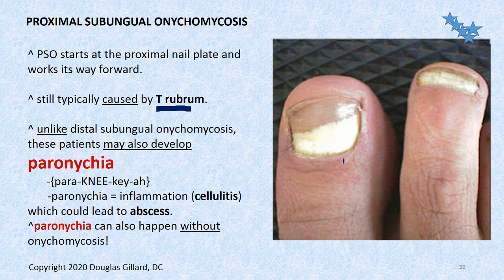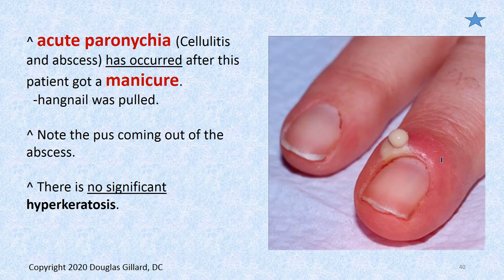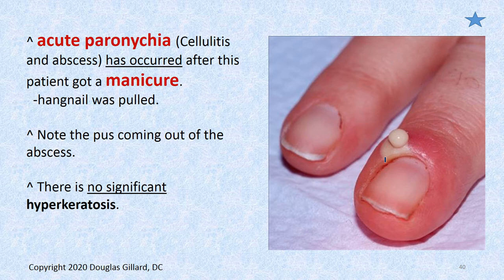Gross picture warning: that bacterial infection at the nail fold has a name — paronychia. Here's acute paronychia, which is cellulitis — all the red inflammation of the skin. She just had a manicure and the manicurist was too rough or had dirty instruments and allowed bacteria to get underneath there. This one is just acute paronychia; she doesn't have proximal onychomycosis — she's fine, she just has acute paronychia.